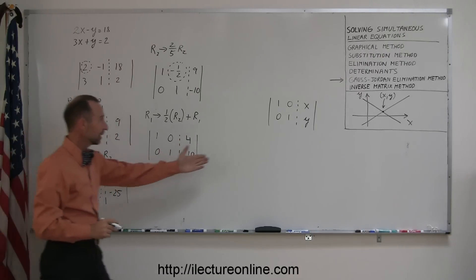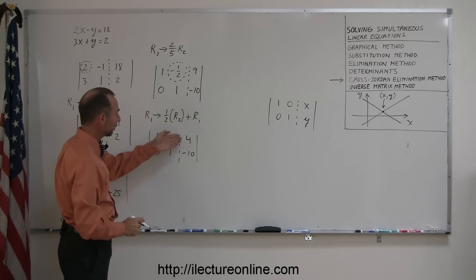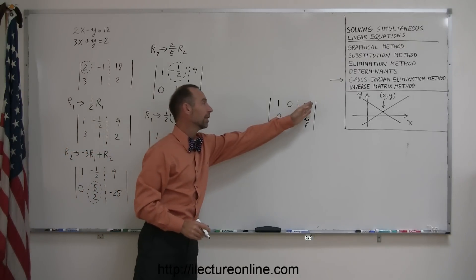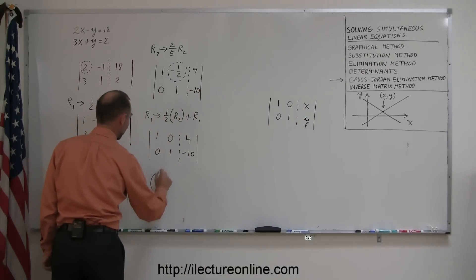I now have this looking exactly like that. One's across the diagonal, zeros everywhere else, and those are the two numbers representing the solution, the x and the y coordinate of the point where the two lines cross. So my solution is 4, and negative 10.